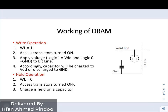Now, just as we discussed for SRAM, there are three operations we need to explain for DRAM as well: write operation, hold operation, and read operation. Let us start with the write operation in DRAM.